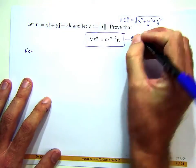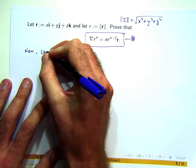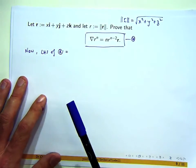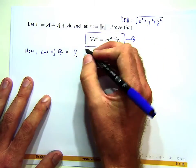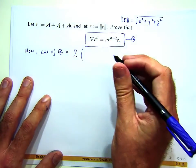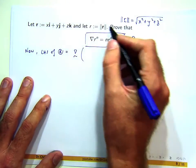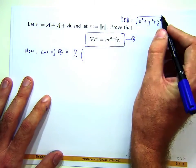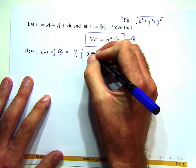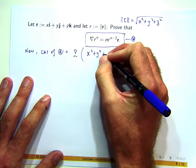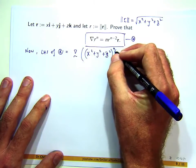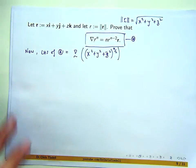So let's call this star. So left-hand side of star is just the following. You're applying the gradient to this r raised to the power n. Now, remember, this has already got a power one-half. So if I combine those powers, I'll get n on two.